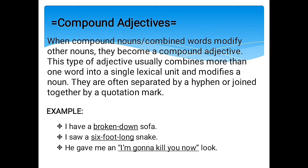Compound adjectives. When compound words modify other nouns, they become compound adjectives. These adjectives combine more than one word into a single lexical unit and modify a noun, often separated by a hyphen. For example, 'I have a broken-down sofa' — broken-down is our compound adjective describing the sofa. Note: a hyphen has no space between words, while a dash has spaces. 'I have a six-foot-long snake.' 'He gave me an I'm-gonna-kill-you-now look.'